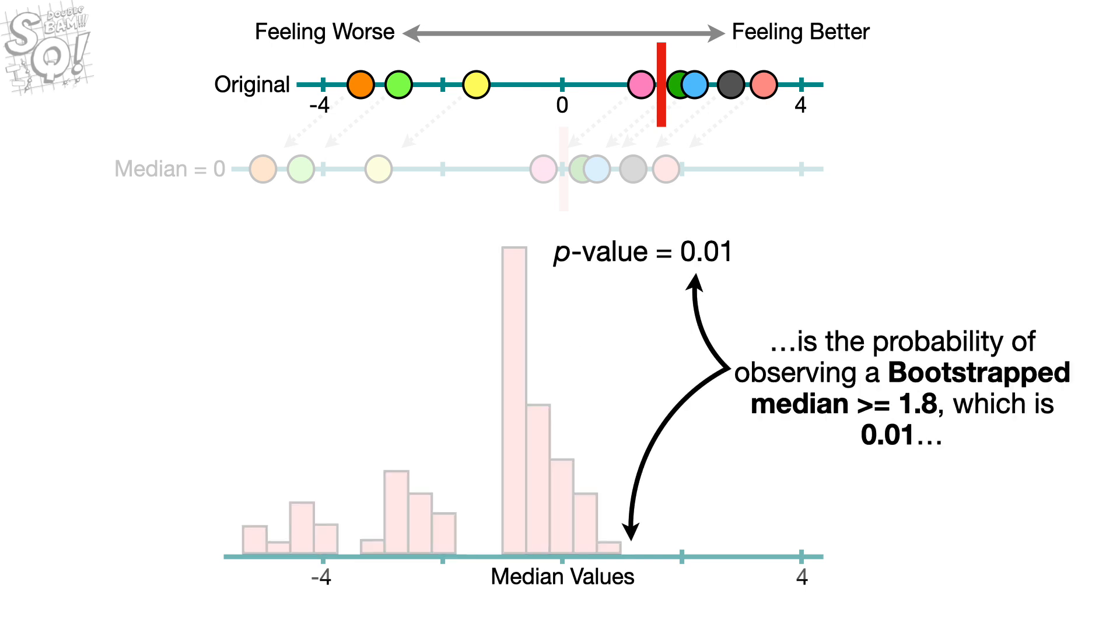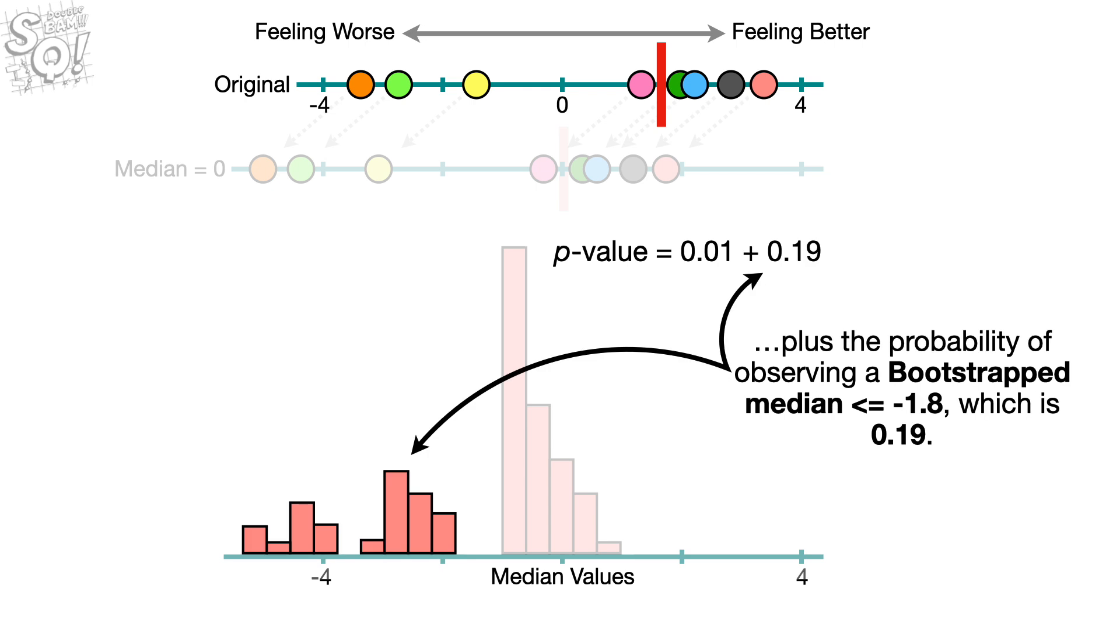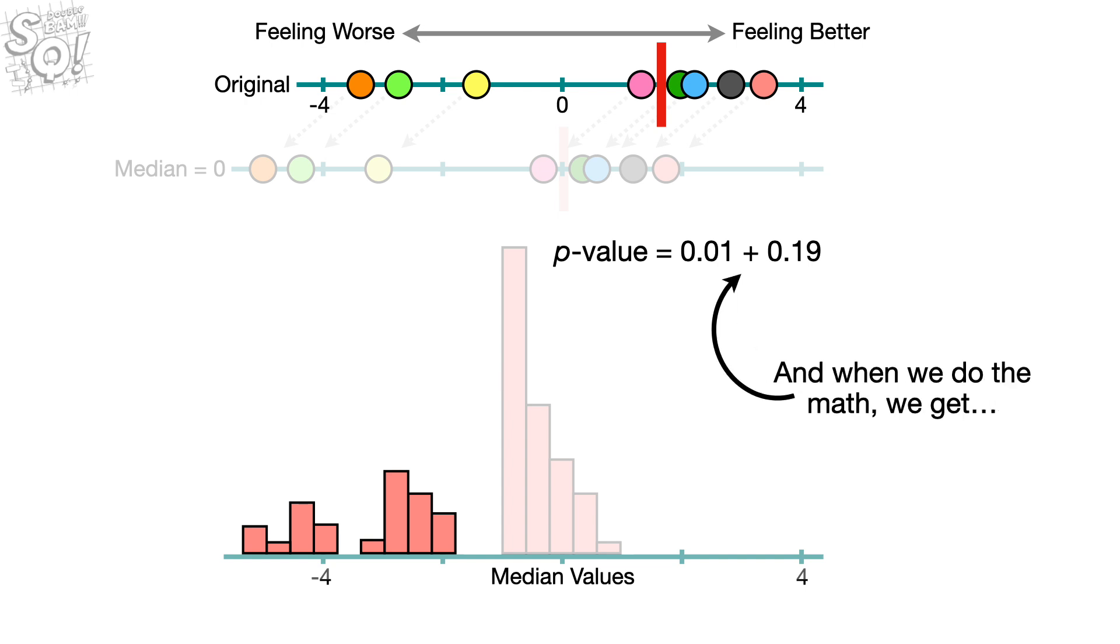given this histogram that represents the hypothesis that the drug has 0 effect, is the probability of observing a bootstrap median greater than or equal to 1.8, which is 0.01, plus the probability of observing a bootstrap median less than or equal to negative 1.8, which is 0.19. And when we do the math, we get 0.2.